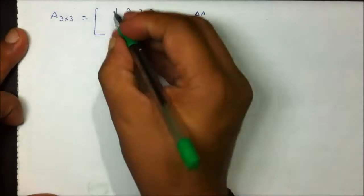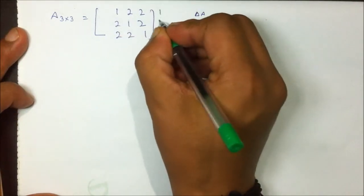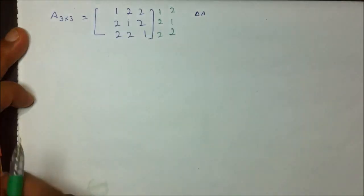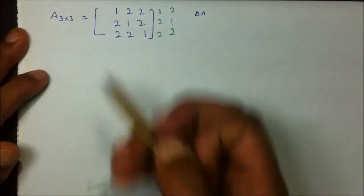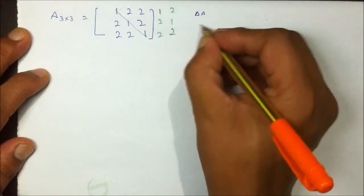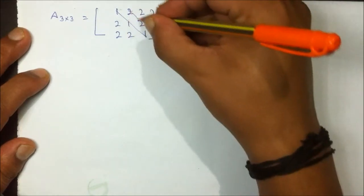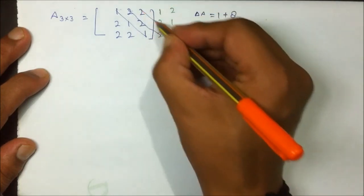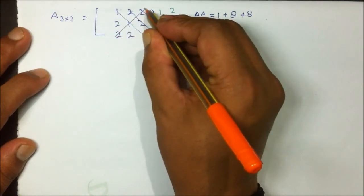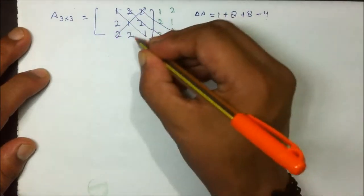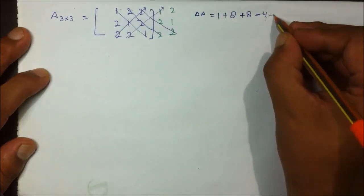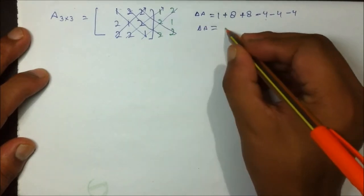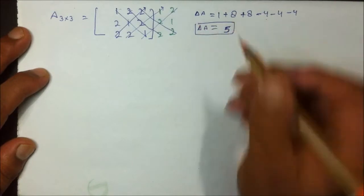For the determinant, I copy two of the columns to the right side. For those who don't know this determinant method, please refer to the previous lecture. Computing the downward diagonals: 1×1×1=1, 2×2×2=8, and 2×2×2=8. Then subtracting the upward diagonals: 2×2×1=4, 2×2×1=4, and 2×2×1=4. The determinant comes out to be (1+8+8) − (4+4+4) = 17 − 12 = 5.